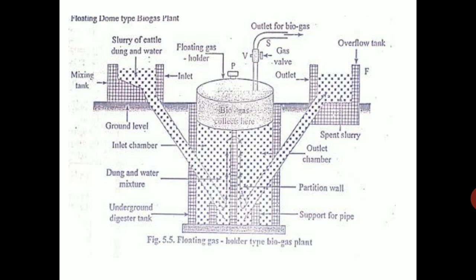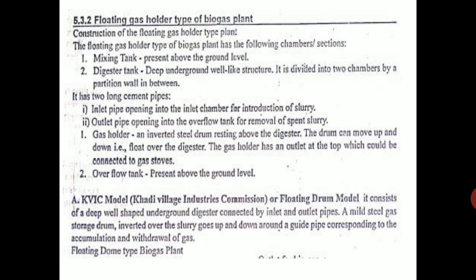After digestion, the slurry moves from the inlet chamber to the outlet chamber. Because of the gas pressure, the spent slurry is sent out to the overflow tank outside. The construction has a mixing tank above ground level and a digester tank deep underground — a well-like structure divided into inlet and outlet chambers. There is also a water seal: the edges of the drum rest in a U-type channel filled with water, so gas will not leak out.